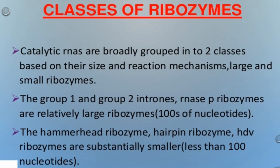Classes of ribozymes: catalytic RNAs are broadly grouped into two classes based on their size and reaction mechanism — large and small ribozymes. The Group 1 and Group 2 introns and RNase P ribozymes are relatively large ribozymes, having hundreds of nucleotides. The hammerhead ribozyme, hairpin ribozyme, and HDV ribozymes are substantially smaller, less than 100 nucleotides.